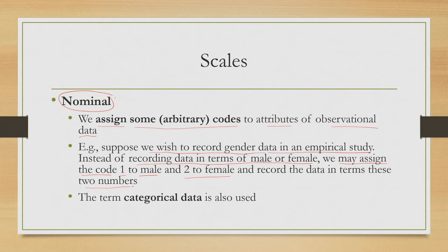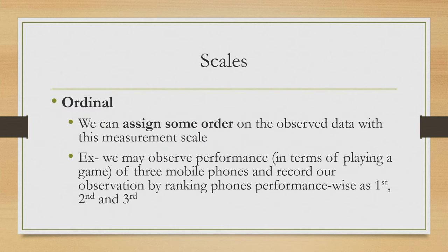So whenever male needs to be recorded, we record it as 1; whenever female needs to be recorded, we record it as 2. The nominal scale of measurement is also occasionally termed as categorical data — so whenever we use the nominal measurement scale, that data is sometimes called categorical data. The next scale of measurement is the ordinal scale, where we can assign some order to the observed data.